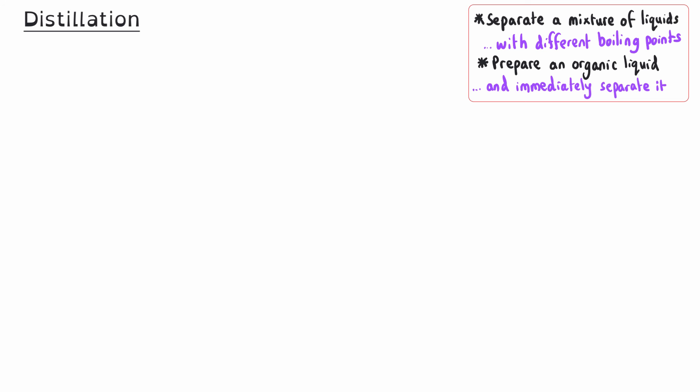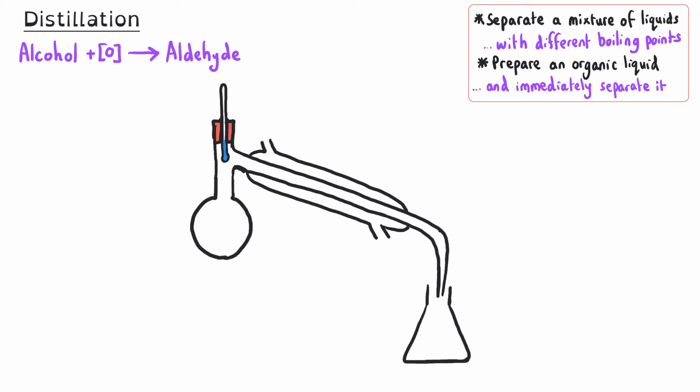Distillation is done to separate a mixture of liquids which have got different boiling points. Or we can use distillation to prepare an organic liquid and immediately separate it from the reactants. For instance, we might want to produce an aldehyde or ketone from an alcohol and then immediately separate it from the alcohol reactant. Whatever the purpose, the method is still the same. This is a diagram of the apparatus used to carry out a distillation.